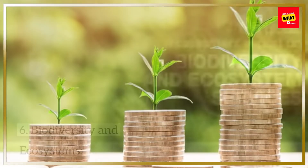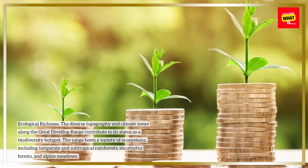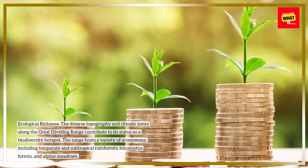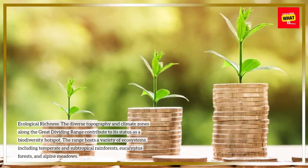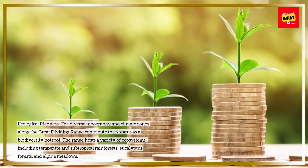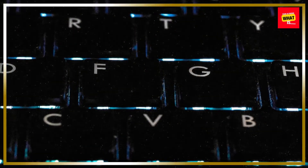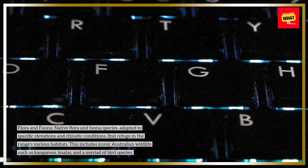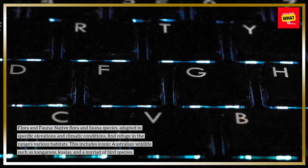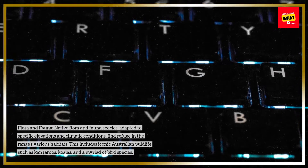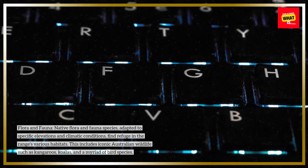Biodiversity and Ecosystems: Ecological richness. The diverse topography and climate zones along the Great Dividing Range contribute to its status as a biodiversity hotspot. The range hosts a variety of ecosystems, including temperate and subtropical rainforests, eucalyptus forests, and alpine meadows. Native flora and fauna species, adapted to specific elevations and climatic conditions, find refuge in the range's various habitats. This includes iconic Australian wildlife such as kangaroos, koalas, and a myriad of bird species.